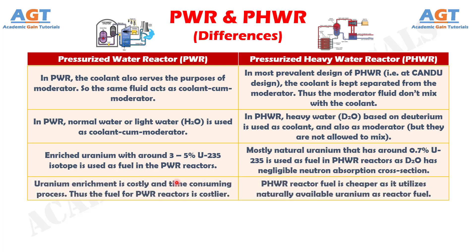Number 4. Uranium enrichment is a costly and time-consuming process. Thus the fuel for pressurized water reactors is costlier. Whereas, pressurized heavy water reactor fuel is cheaper, as it utilizes naturally available uranium as reactor fuel.